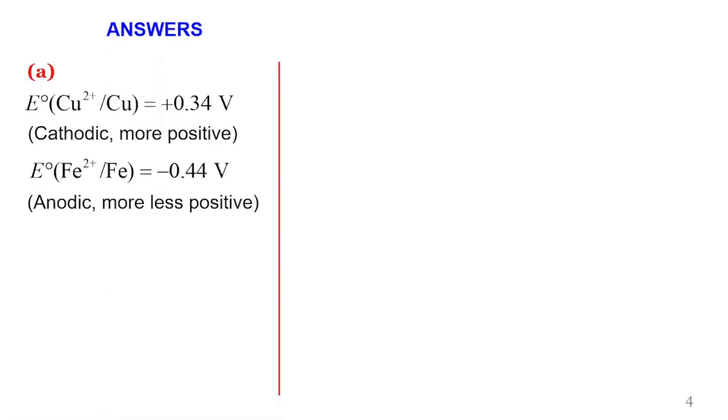There are two approaches to the first question. The first one, you can inspect the standard reduction potential of the copper and the iron couple. The one that is more positive will form the cathode compartment and the one that is less positive will form the anode compartment. In this case, the copper couple has a higher positive standard reduction potential than the iron one. Therefore, the copper couple forms the cathode compartment while the iron one becomes the anodic compartment because it's less positive.